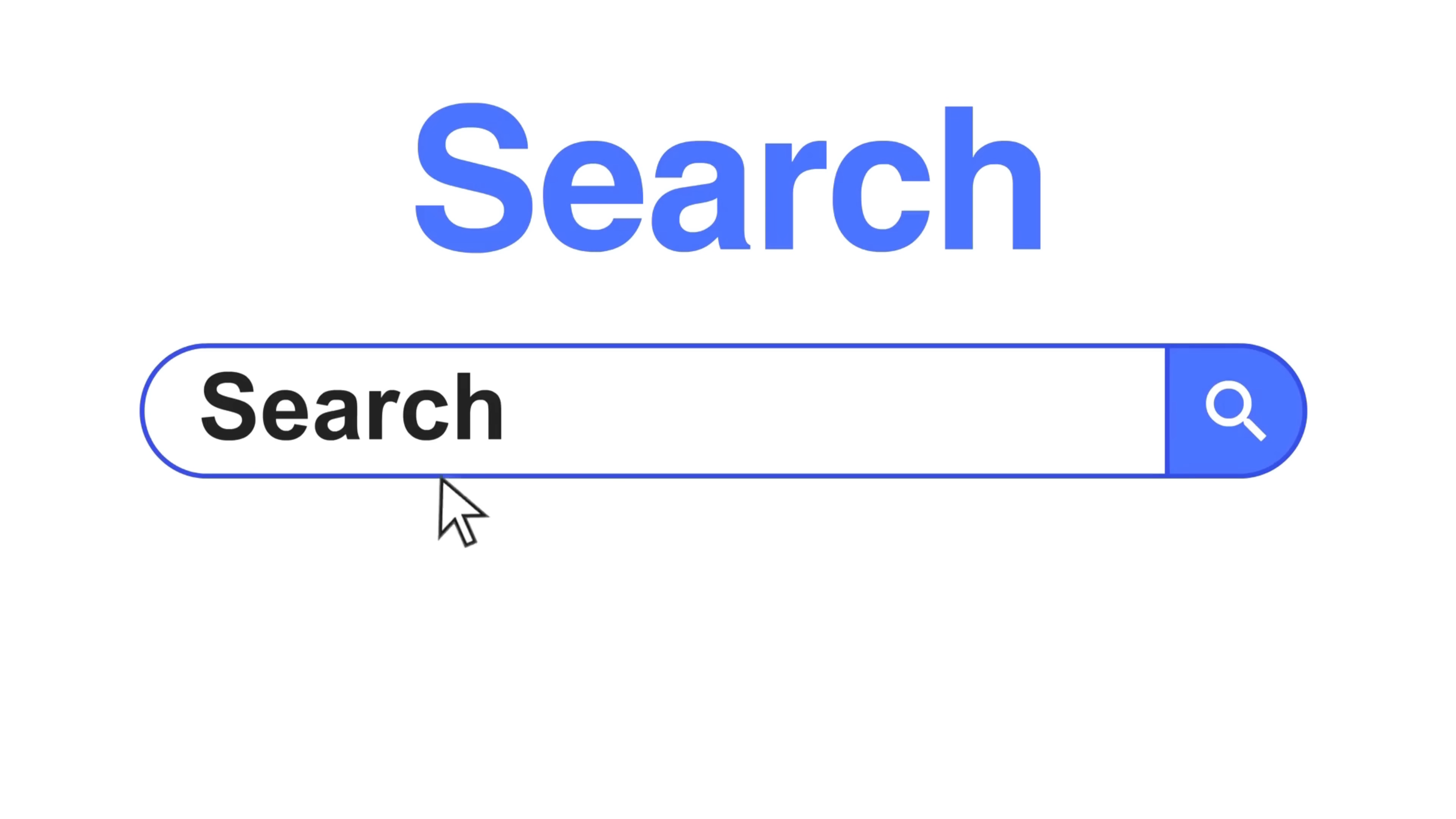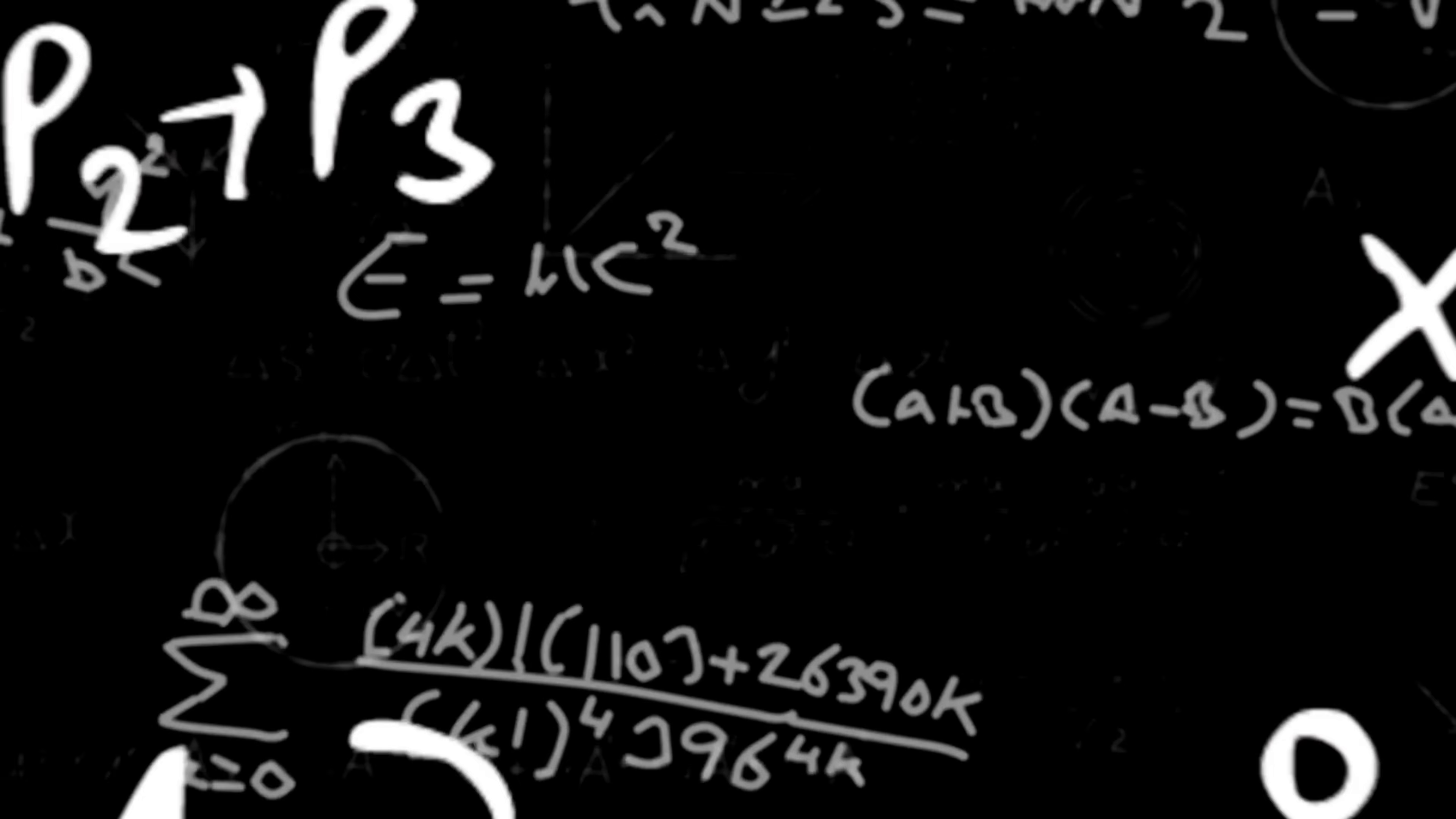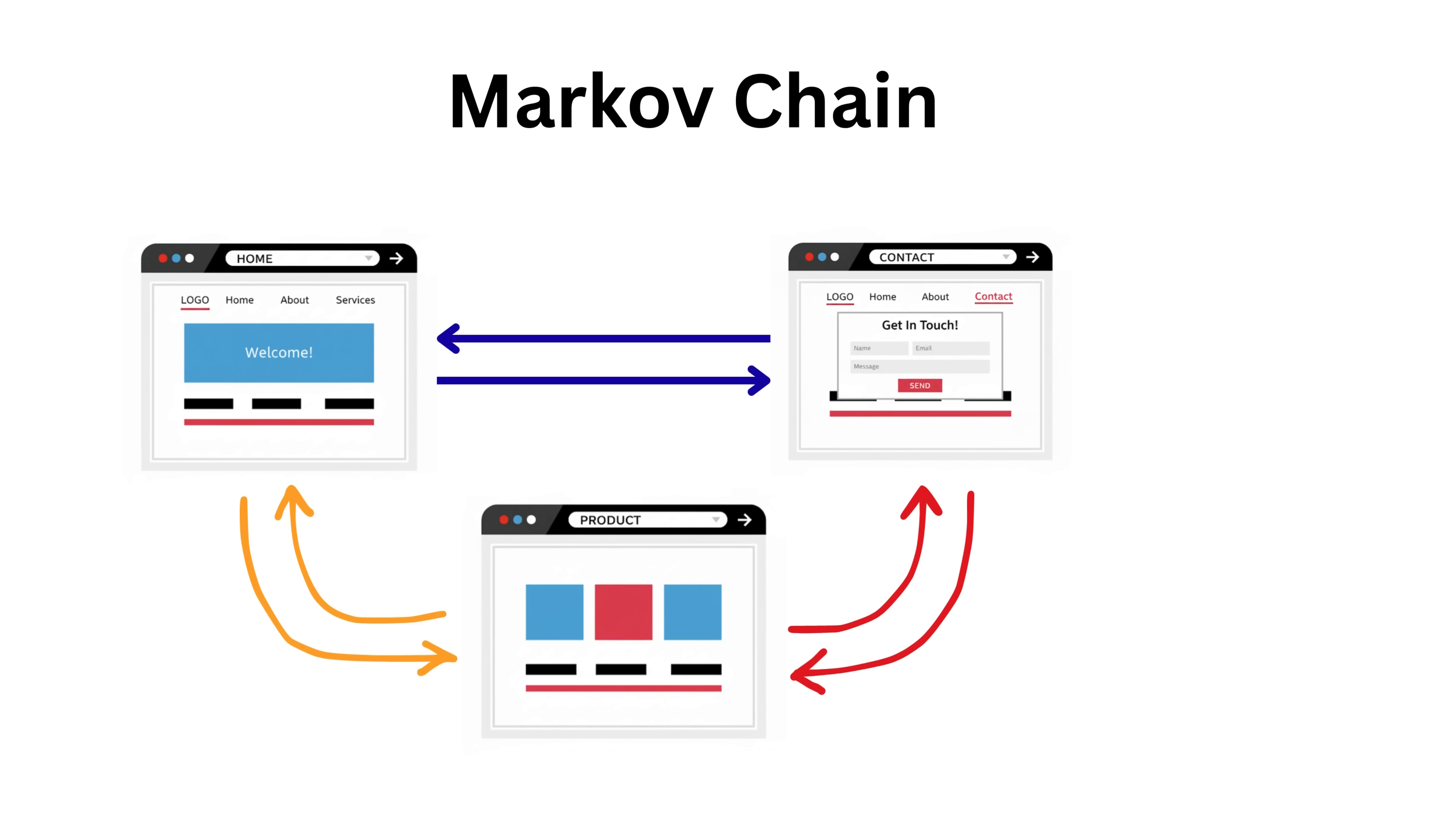By the way, every time you search on Google, millions of pages are competing for the number one spot. But Google doesn't roll dice to decide. It uses math. At the heart of the original page rank model is a Markov chain where each web page is like a state in a network and links act as transitions.